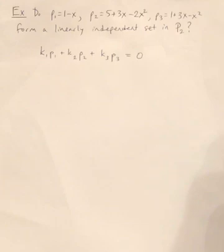And if it turns out that all the K's must be 0, then it would be a linearly independent set. And if there is a possibility of having some of the K's be non-zero, then it would be linearly dependent.